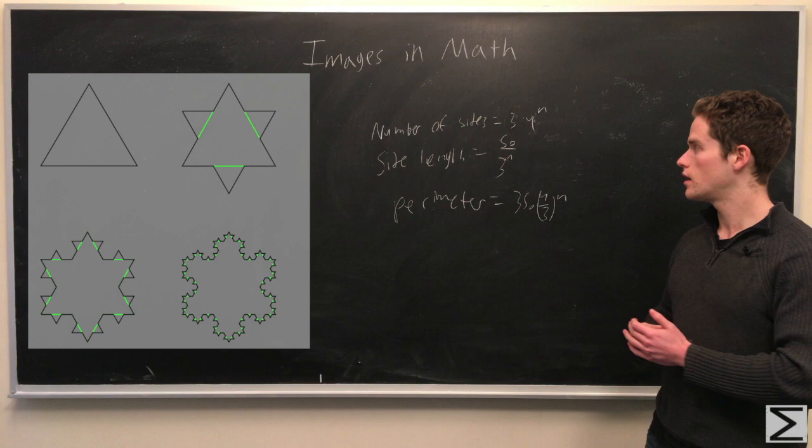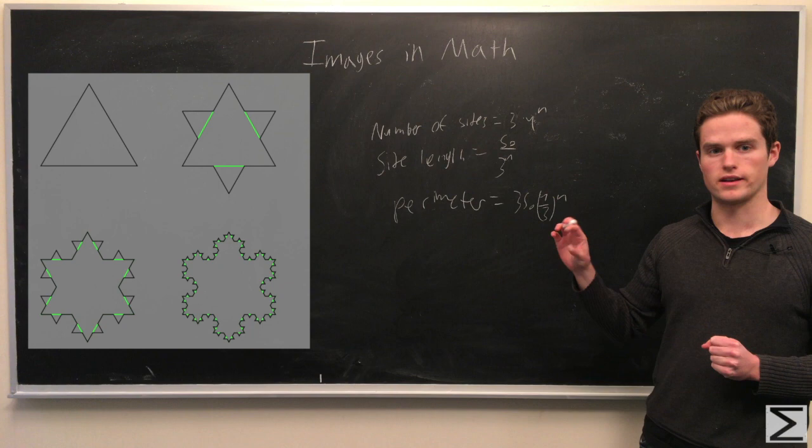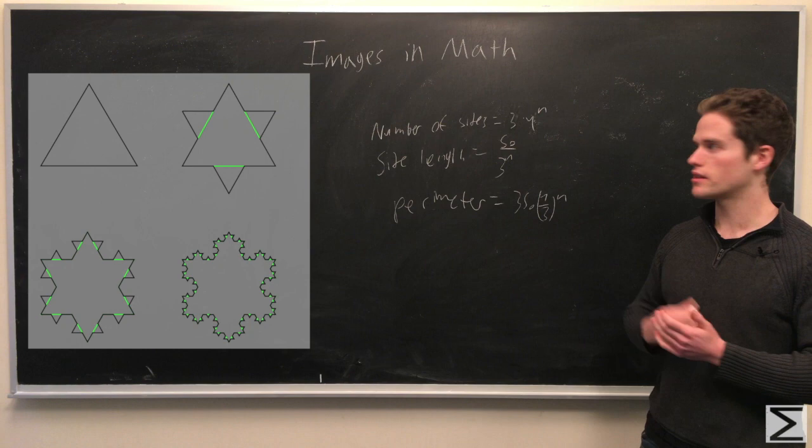And also note that when we remove a middle third and put the triangle, each new edge is 1 third the length of the original edge. So the side length of each edge will be the original side length, which is whatever we start with, over 3 to the n, so 1 third each time.